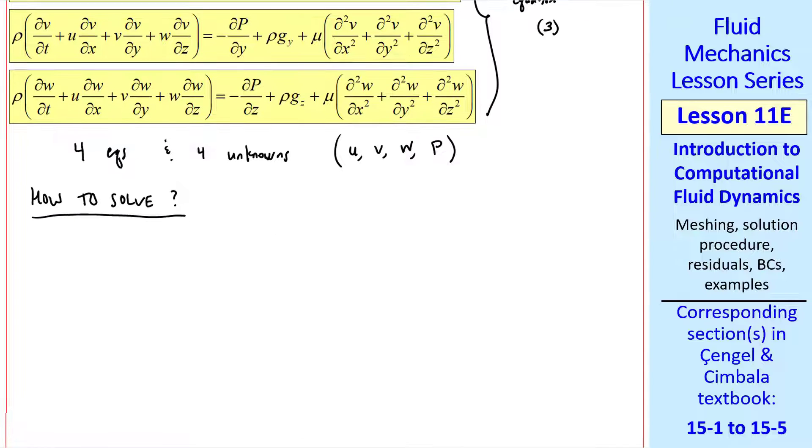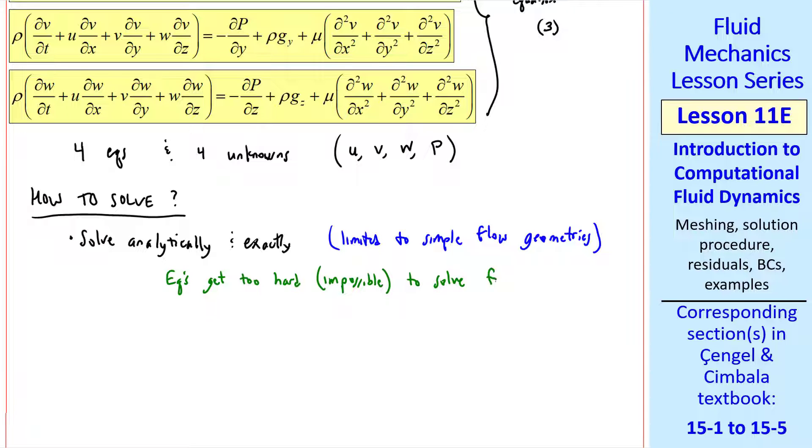How do we solve this set of equations? We have three basic choices. We can solve these equations analytically and exactly, but this is limited to simple flow geometries, as we've been showing in previous lessons: fully developed pipe flow, Couette flow, and oil film falling down a vertical wall. The equations get too hard or impossible to solve for complicated geometries, so this technique is limited.